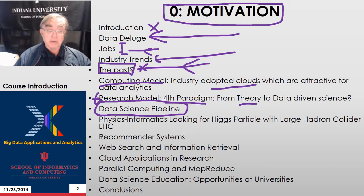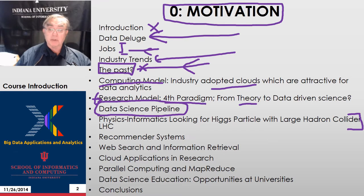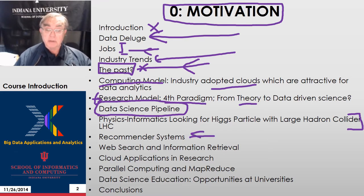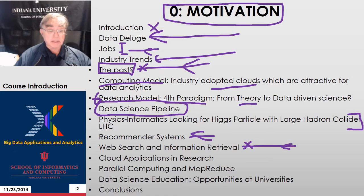Then we actually go through some of the topics discussed in more detail in this class. We have a few slides on the physics informatics of looking for the Higgs boson with the Large Hadron Collider in CERN Geneva. Then we look at recommender systems and their implications for algorithms, then web search and information retrieval, another major application. We look at how research uses clouds — actually doesn't use clouds very often.